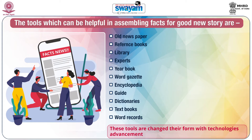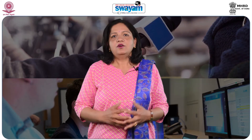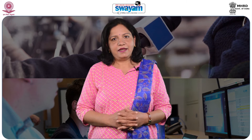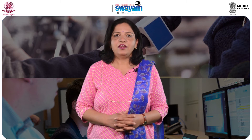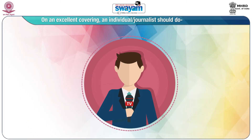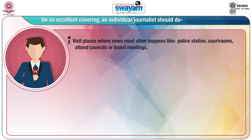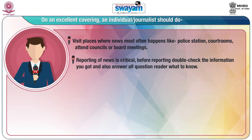These tools have changed from time to time, but still they are very much similar. A good journalist will be known by his or her content, authenticity, clarity and way of presentation. For excellent coverage, an individual journalist should do regular visits to places where news most often happens, like police stations, court rooms, councils and board meetings. Reporting of news is a critical job — before reporting, double check the information you got and answer all questions related to it.